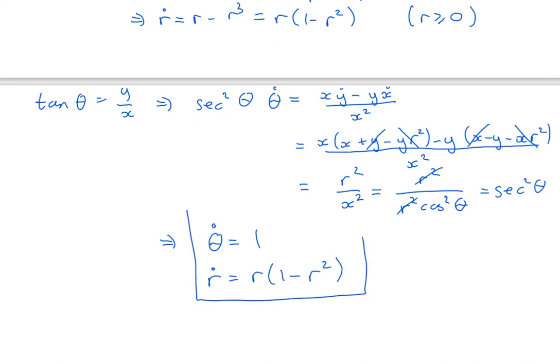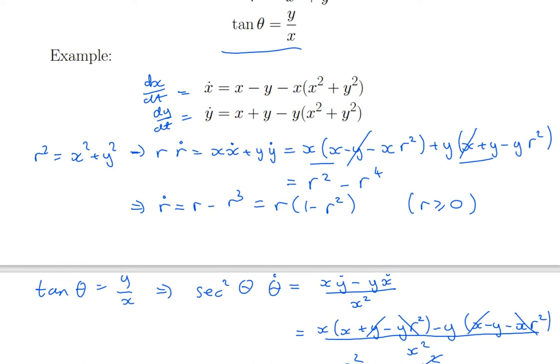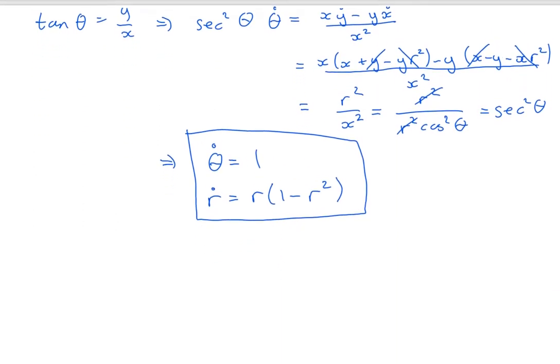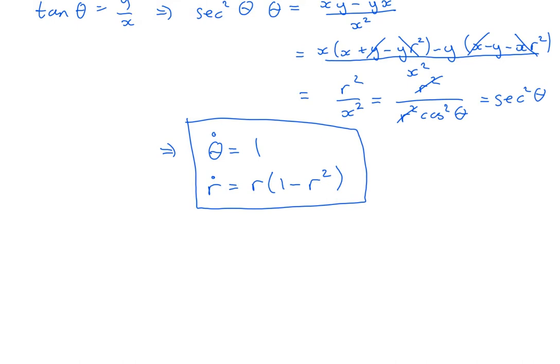And I had r dot equals r(1 minus r squared). So this differential equation in polar coordinates is equivalent to this very complicated non-linear looking one. Well, it's still non-linear, but it's much simpler that I had up here. So I've taken that differential equation and I've transformed it into polar coordinates. And now it's easy to sketch the phase portrait.